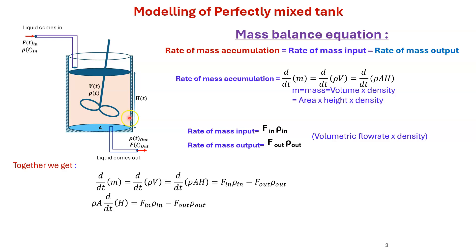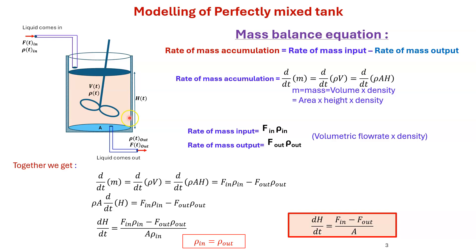Taking the assumption that density is uniform throughout the tank — meaning ρ_in = ρ = ρ_out — the density terms cancel out on both sides. We finally get: dH/dt = (F_in − F_out) / A.